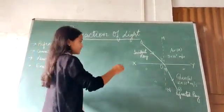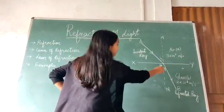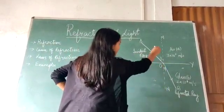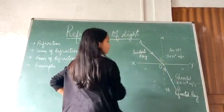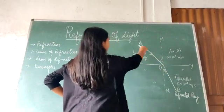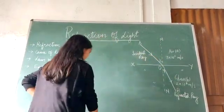In this case, this angle of refraction, it is this angle, which is made between this normal with this refracted ray. And the angle of incidence, it is the angle which is made between this normal with this incident ray.